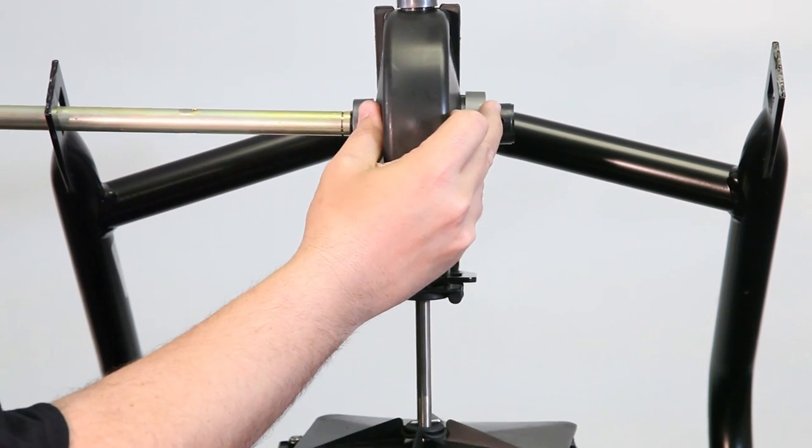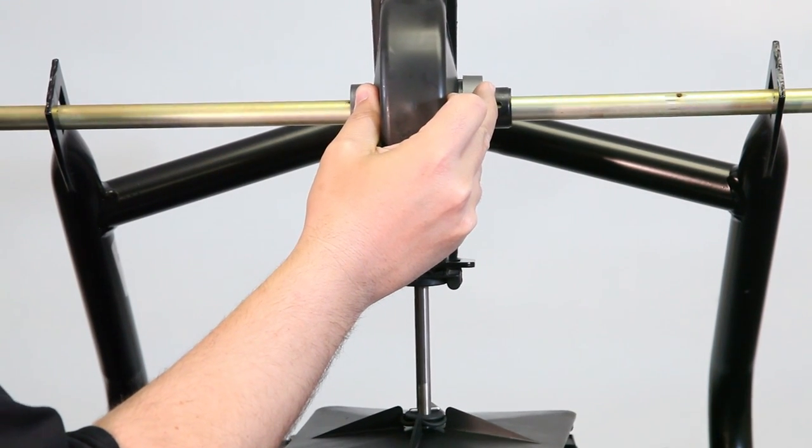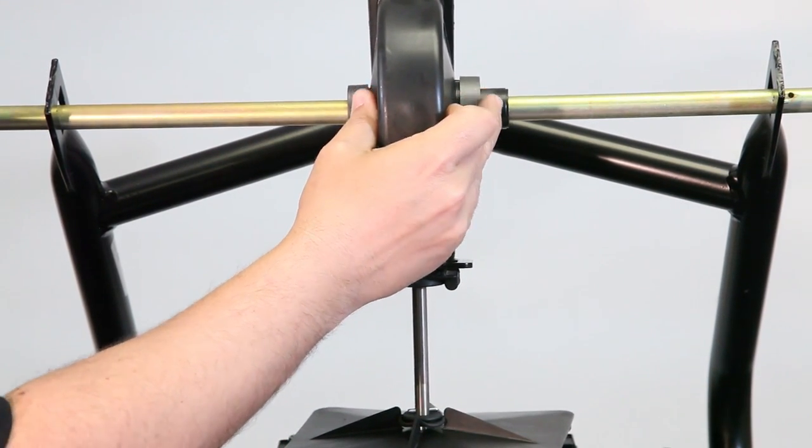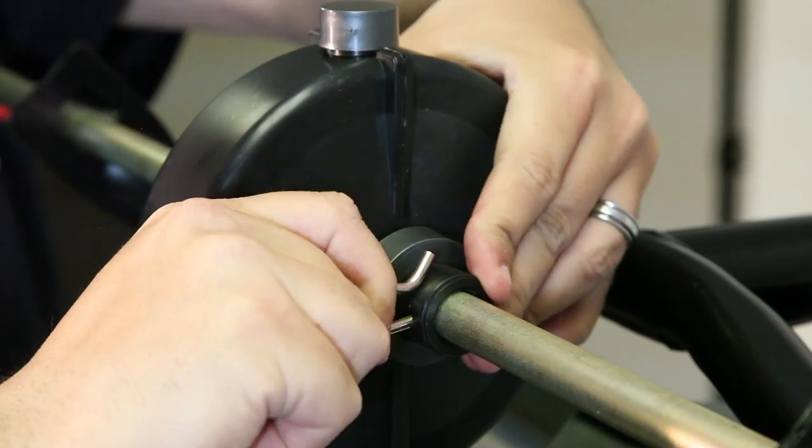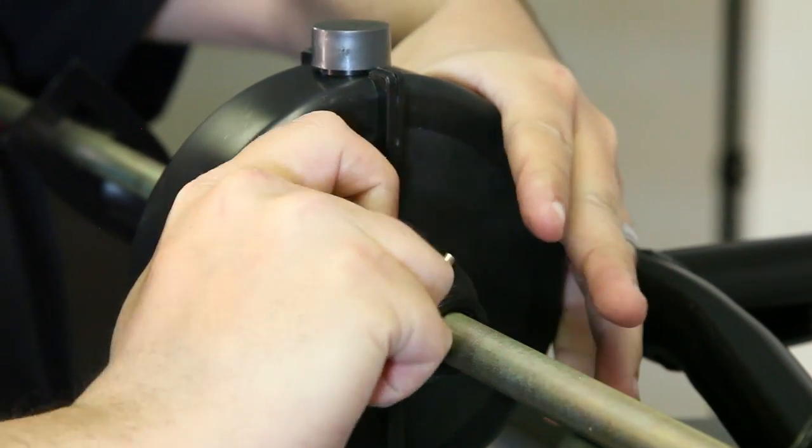Insert axle number 6 through both hopper support openings and transmission assembly. Rotate axle to line up the hole with the hole in the transmission assembly hub. Insert hairpin cotter number 40.